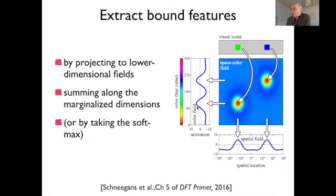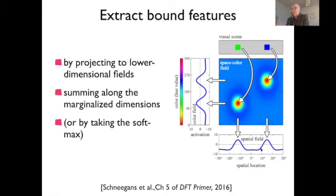In this situation you would get a peak at green and a peak at blue, answering what colors are in the scene. Similarly, marginalizing along color for all spatial locations gives a purely spatial representation — showing where there are visible objects. Extracting individual feature dimensions is just marginalizing. Marginalizing is the term from probability theory: if you have a probability density depending on multiple variables, you sum over any of those dimensions, eliminating the superfluous dimension to get the feature you are interested in.